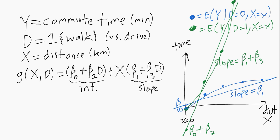So you can see the green slope for the walkers is even more positive and steep. So in this case, beta three is positive, just as over here beta two was negative.